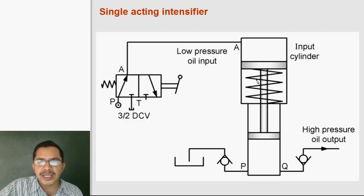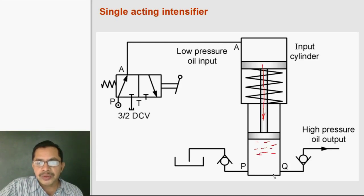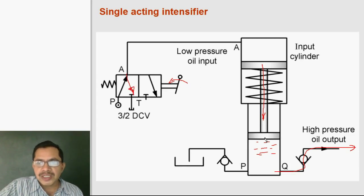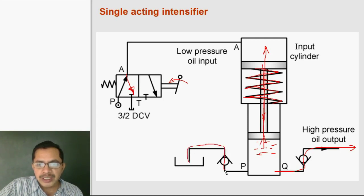Now the operation of the single acting intensifier. When the lever is in the first position, P to A oil flows to the big cylinder, the piston moves in the downward direction, and it pushes oil in the small cylinder out through the check valve at high pressure. When the lever is shifted to the other position, the A to T connection is made and the piston moves in the upward direction due to spring force, sucking oil from the reservoir into the small cylinder. So in the upward stroke oil is sucked in, and in the downward stroke high pressure oil is delivered from the small cylinder.